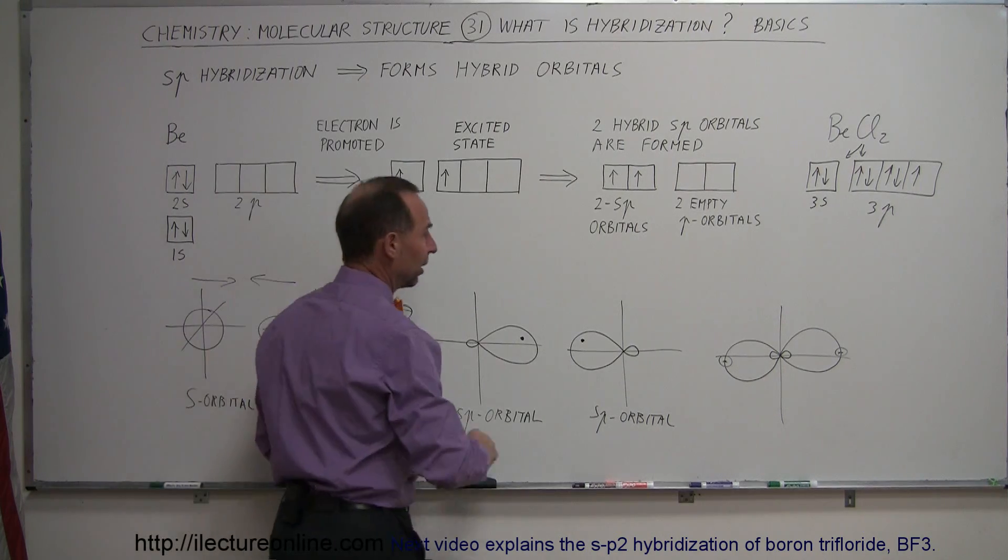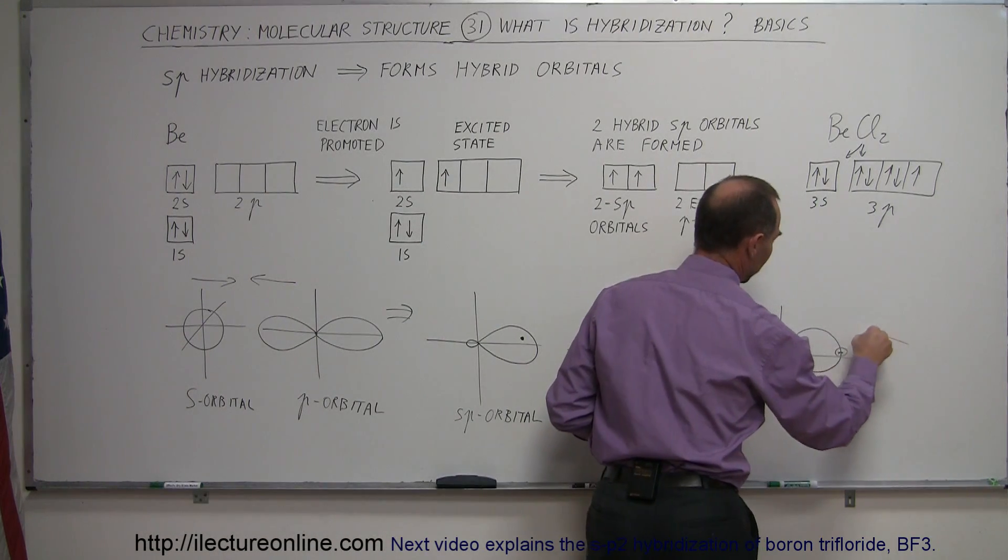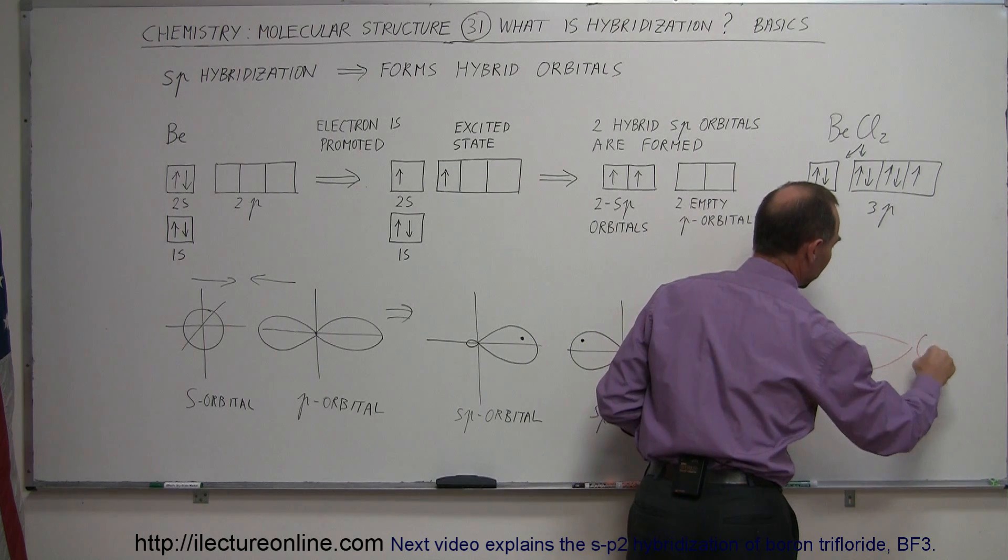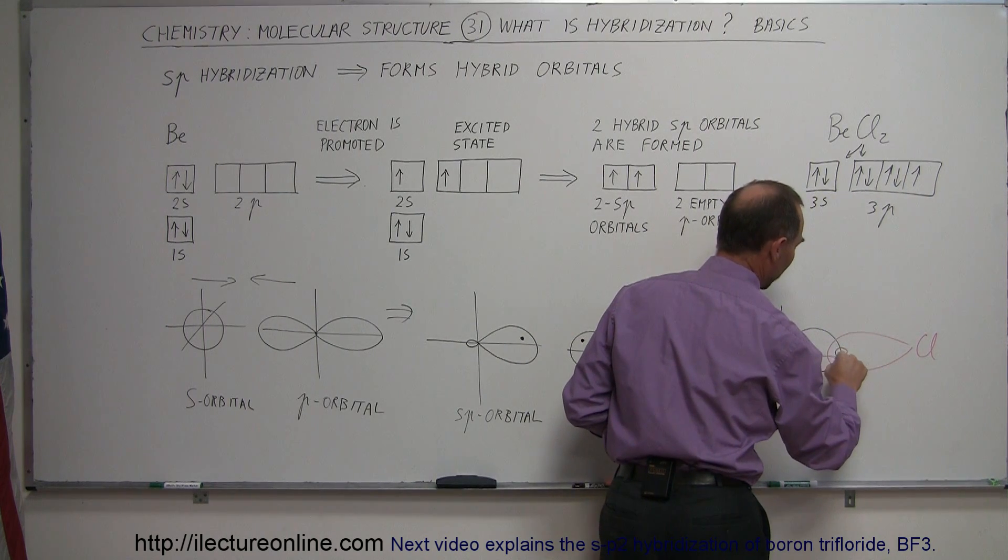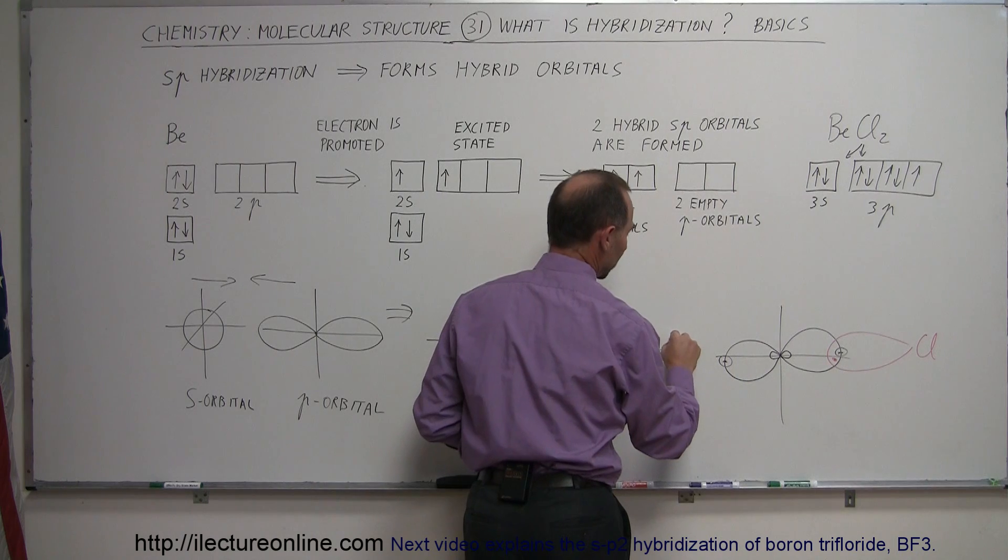And so when we then form bonds, it will look like this. So this would then form a bond like that. There's your chlorine, and so we have that region now with two electrons in it.